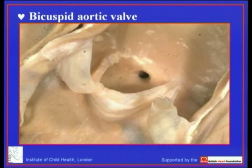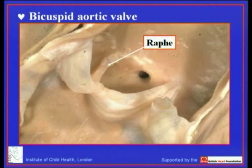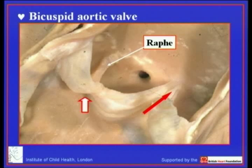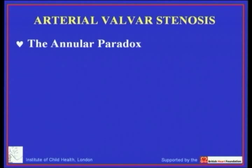We see a similar situation when the valve is bicuspid. Here is a good example where there is a raphe between the two coronary arterial leaflets, and you note there has been reduction of the interleaflet triangle again with an annular attachment of the two arterial leaflets. Now we have two persisting triangles extending up to the sinutubular junction.